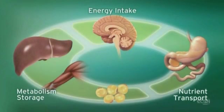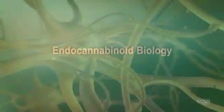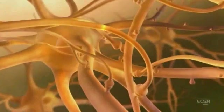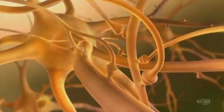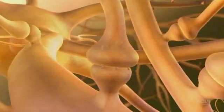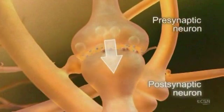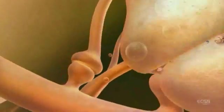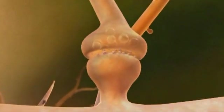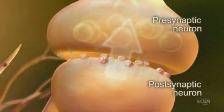Integration of these central and peripheral ECS components is achieved through neuronal and hormonal signaling. Within the brain, CB1 receptors are among the most abundant G protein-coupled receptors. However, in contrast to classical signaling where information travels from pre- to post-synaptic neurons, the ECS uses retrograde signaling — information travels from post- to pre-synaptic neuron.